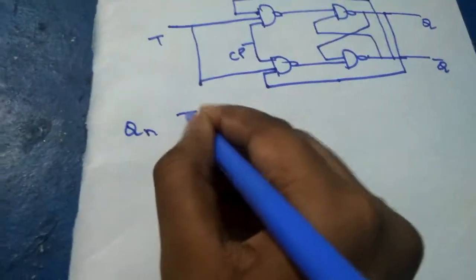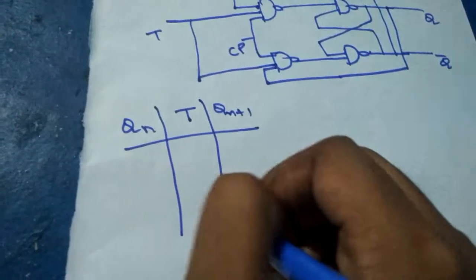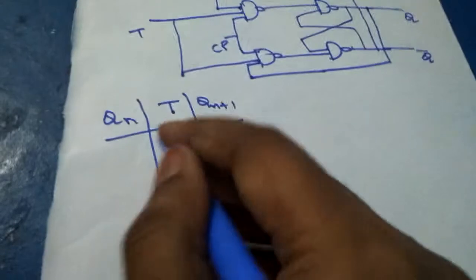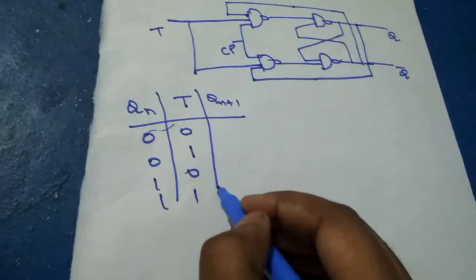That is Qn, T, Qn+1. Qn is the present state, Qn+1 is the next state. Here Qn and T are the inputs: 00, 01, 10, and 11.